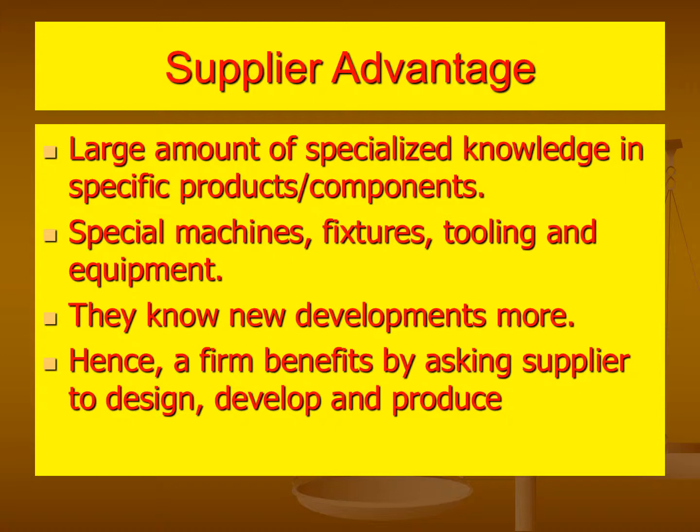Why are suppliers able to provide components or sub-assemblies at low cost? It is because of the large amount of specialized knowledge in specific products and components, the availability of special machines, fixtures, tooling, and equipment, and their knowledge of recent developments in the components and sub-assemblies in which they specialize. Hence, a firm benefits by asking suppliers to design, develop, and produce their special requirements as per the needs of the original equipment being designed.